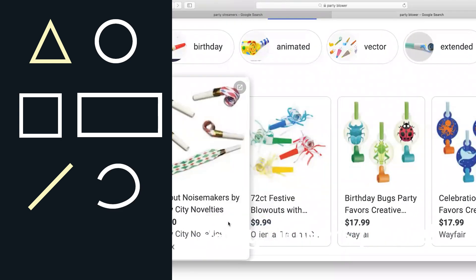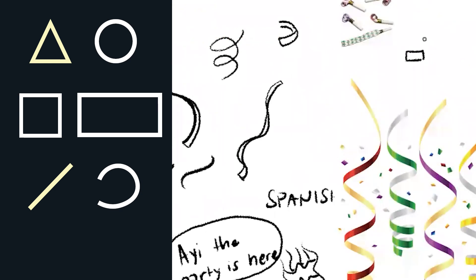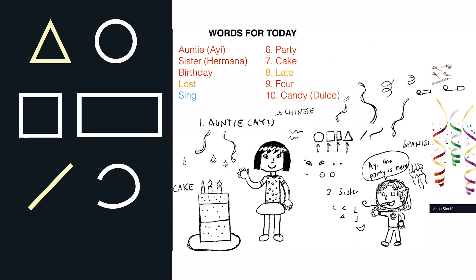So how do we draw party blowers? You have a rectangle here, and then what do we do at the end? We can put the spiral in the front if it's not blown yet. We can have her blowing a party spiral. So I think we've got party, we've got cake. Let's draw some candies — some dulce.